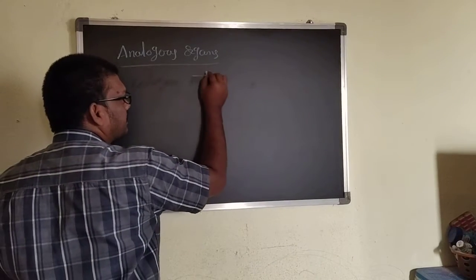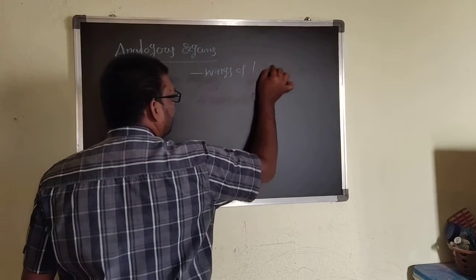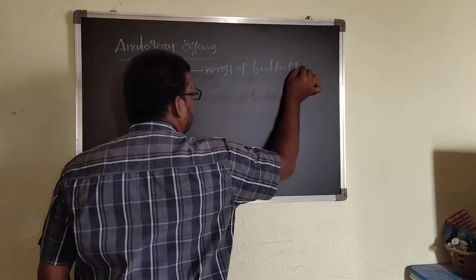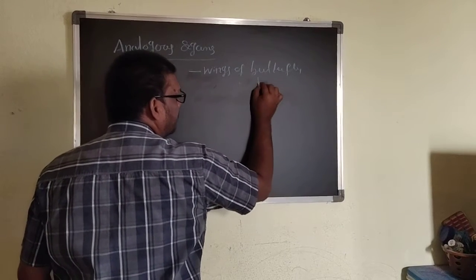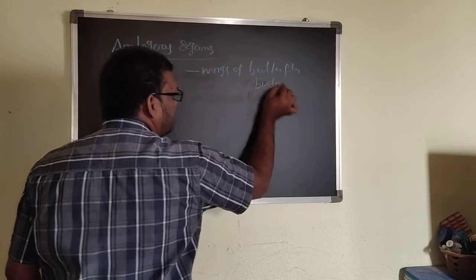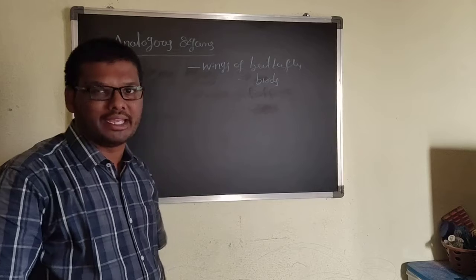I can explain some examples: wings of butterfly and wings of bat or wings of birds. Here, the structural pattern is different and the function is the same, useful for flying.